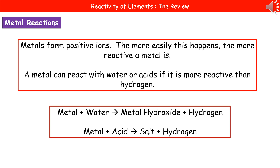A metal will react with water or acids if it's more reactive than hydrogen, because acids all contain hydrogen ions. So as long as the metal is more reactive than hydrogen, it will react. If it's less reactive than hydrogen, there's no reaction. The general equations to remember are: metal plus water makes a metal hydroxide and hydrogen, like we saw with our group one alkali metals; and metal plus acid makes a salt and hydrogen. Make sure you know those general equations and can write the names of salts when given the name of an acid and a metal.